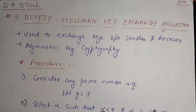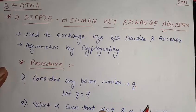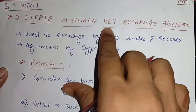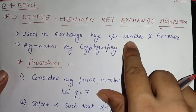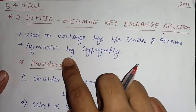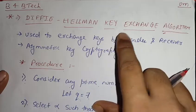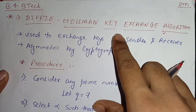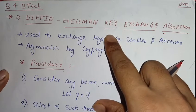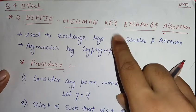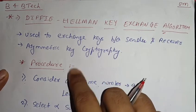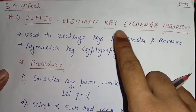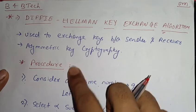Hello friends, welcome back to our YouTube channel B4B Tech. In this video we are going to see the Diffie-Hellman key exchange algorithm. It is used to exchange keys between sender and receiver. It is an asymmetric key cryptography — not a technique used for encryption and decryption, but simply a key exchange algorithm.